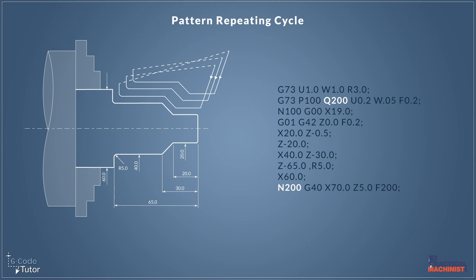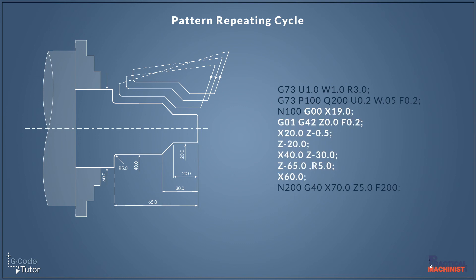All the information between the two N numbers would be our subroutine and that would be the profile of our part. The roughing cycles would follow that until it's achieved the correct sizes that we've stated in the first two lines of the cycle.